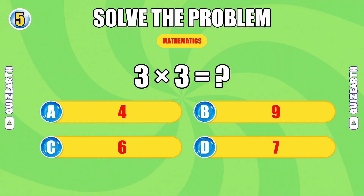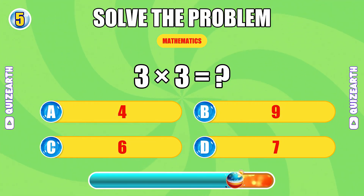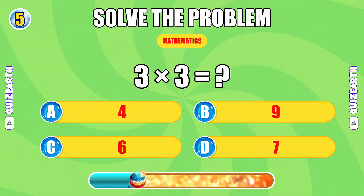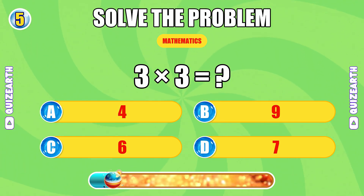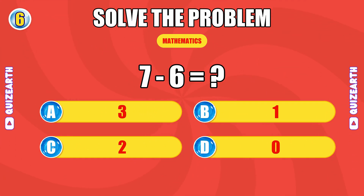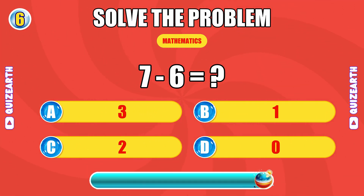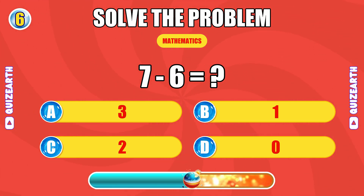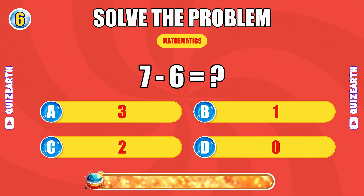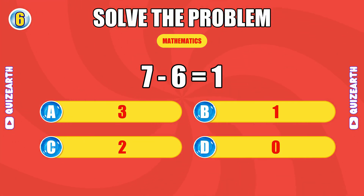What is three times three? Crushing it — the answer is nine. What do you get when you subtract six from seven? Fantastic — the answer is one.